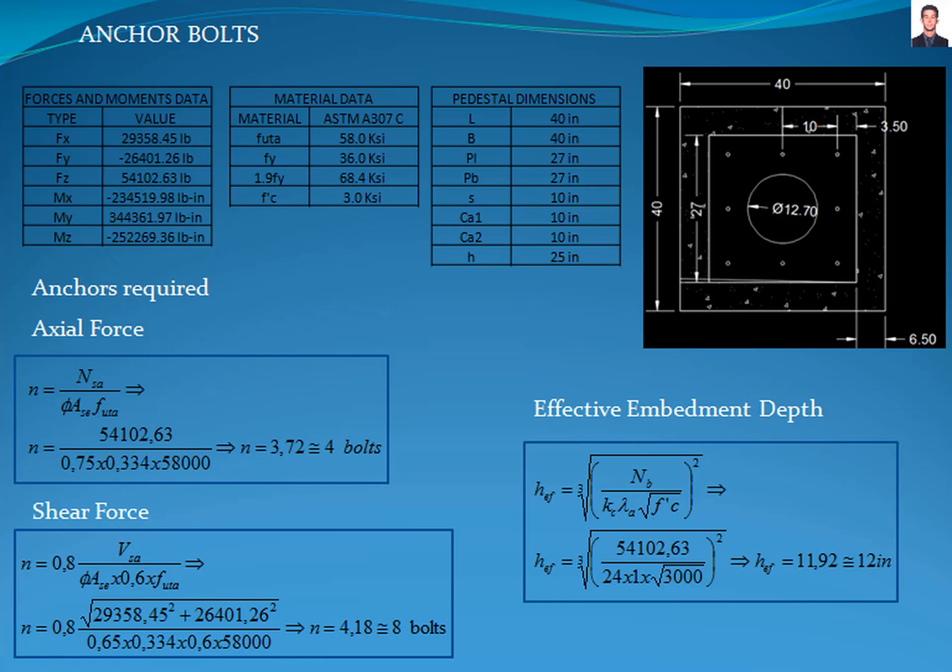The typical materials used in the design of anchor bolts are ASTM A307 grades A and C, ASTM A354 grades B, C, and D, ASTM A449 grade 1, and ASTM F1554 grades 36, 55, and 105.